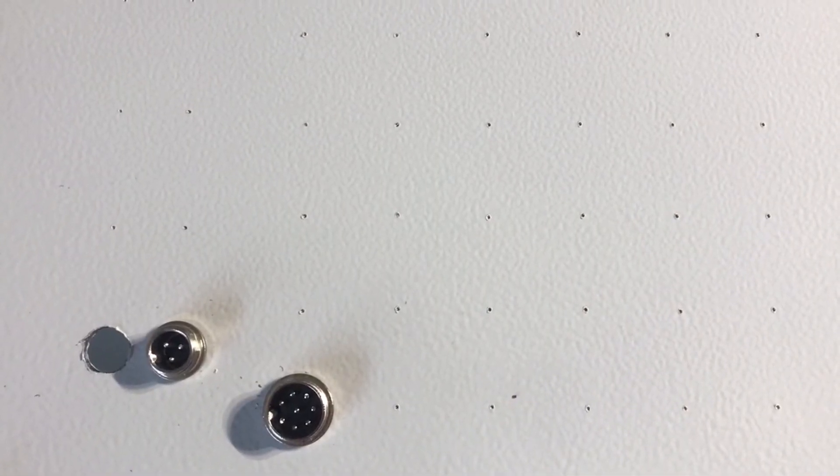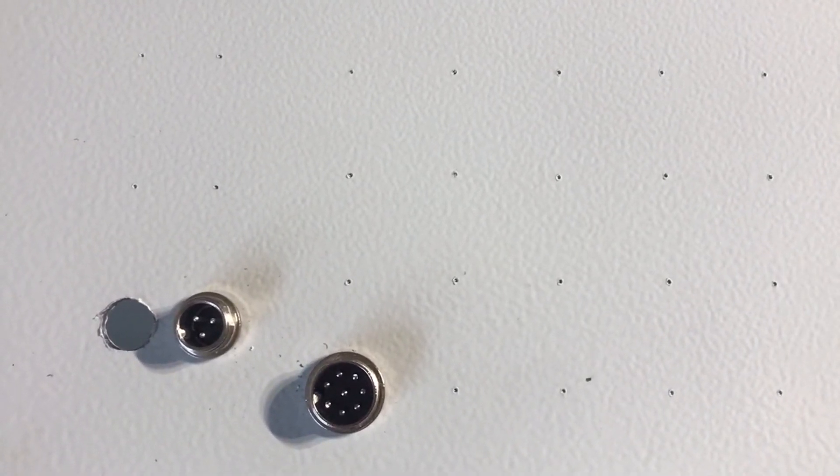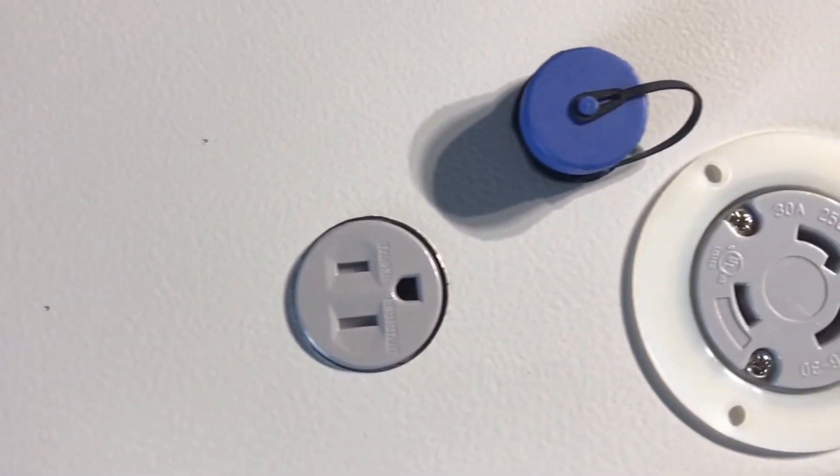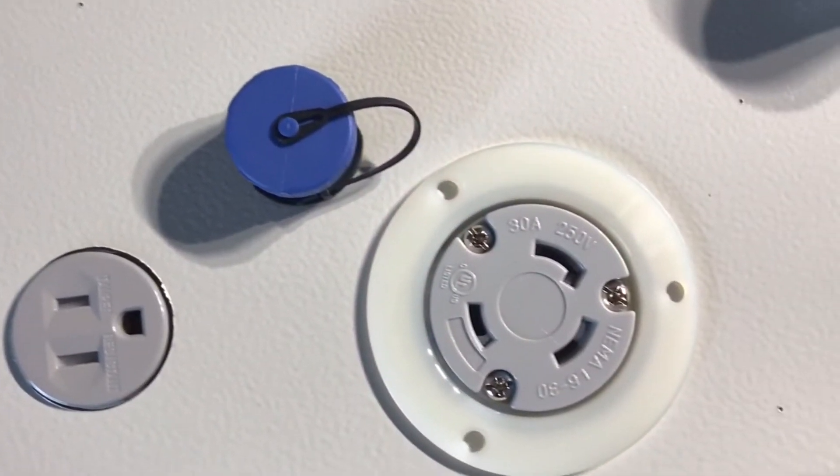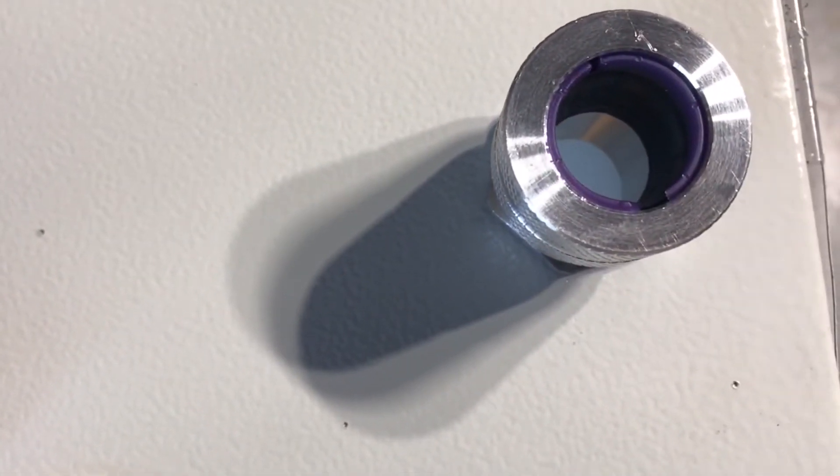After punching all the holes through the template we did a size check to make sure everything fits. RTD and I.O. connectors, NEMA 515, user console, L630, and six gauge input cord grip.